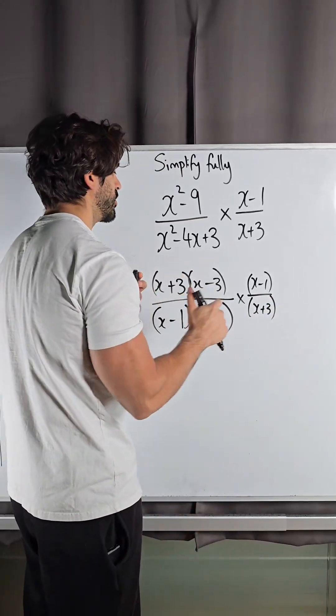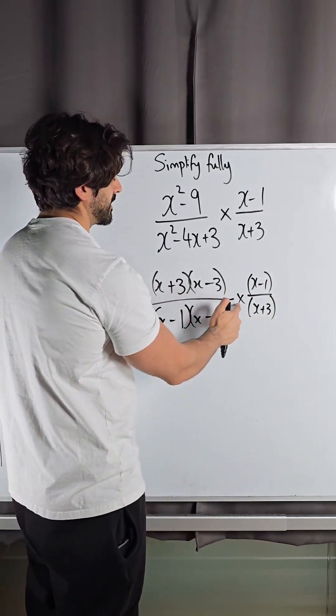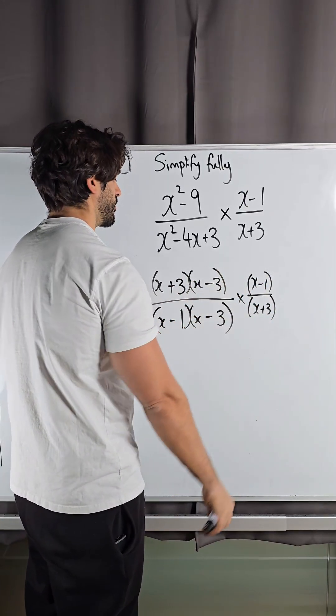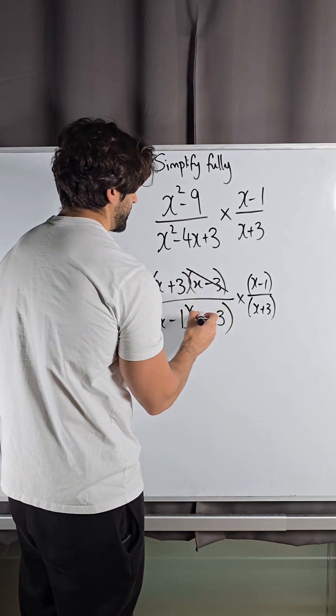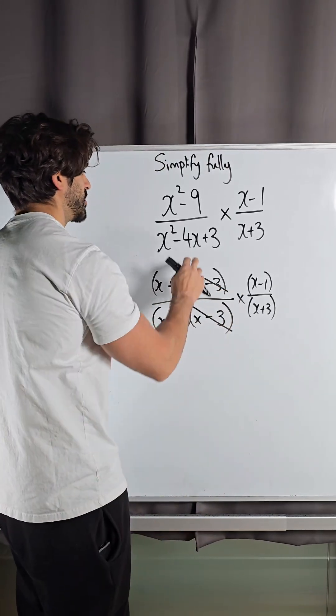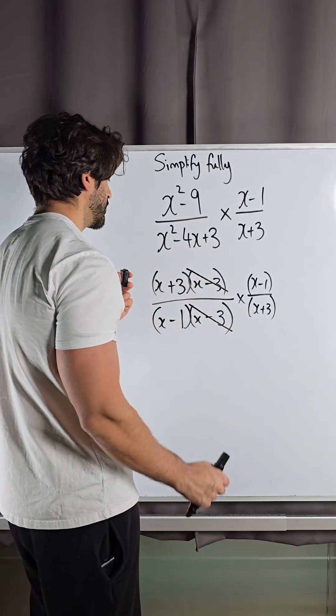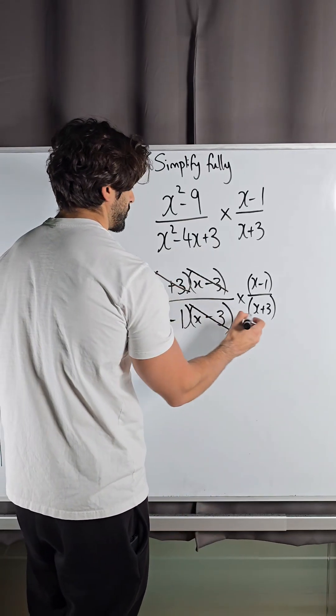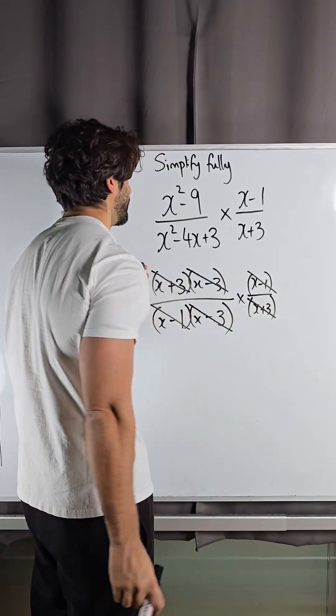So you're going to look for anything on the top that cancels with anything on the bottom because this being multiplied means all of this joins into one fraction. So what I notice is that x minus 3 cancels on the top and the bottom, which didn't happen in the beginning because we hadn't factorized yet. But also, I see these cancel on the top and the bottom and these cancel on the top and the bottom.